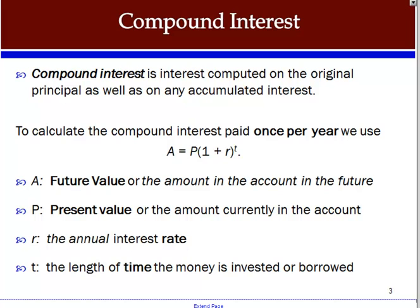There is a basic formula for calculating compound interest earned once per year. This is not the same as simple interest. Simple interest is money earned one time — it might be over a period of years but it's not compounded. You may remember the simple interest formula: interest equals principal times rate times time. But we're talking about compound interest where interest is being earned on interest that is accumulated, and right now we're going to earn or pay that interest one time per year.